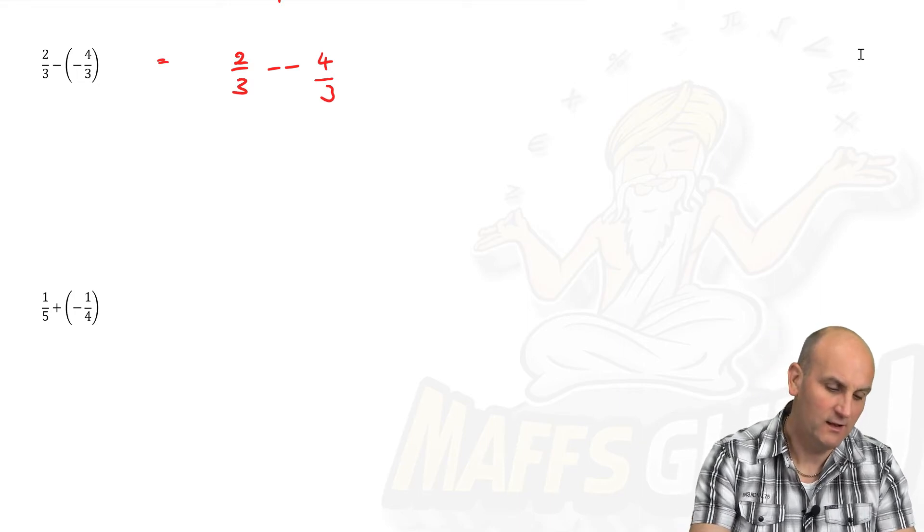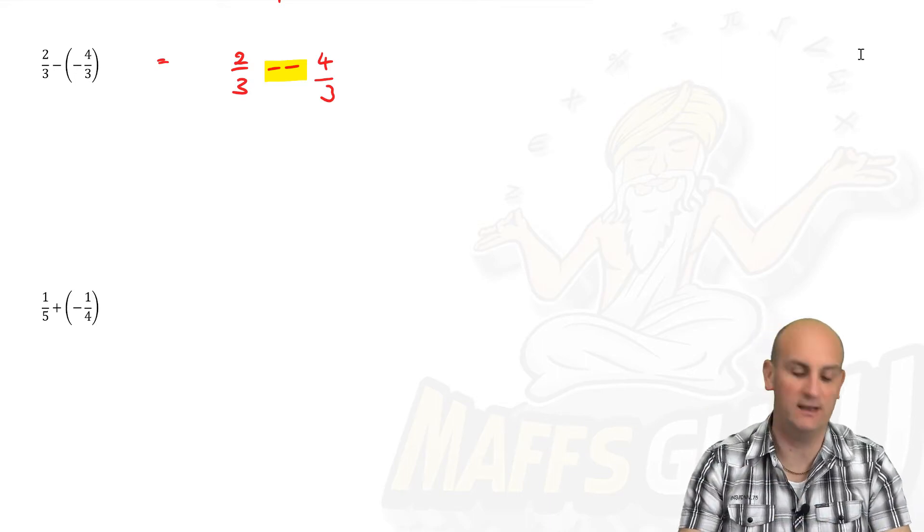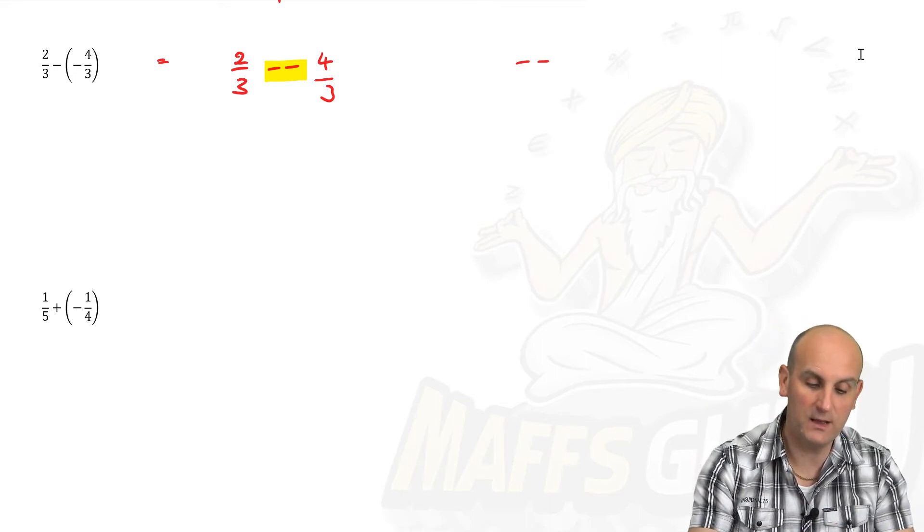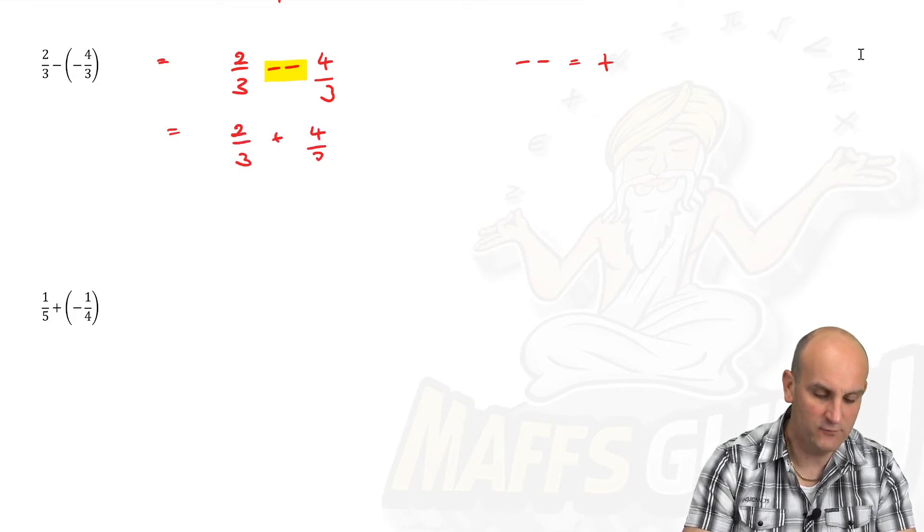Well, a minus and a minus. We're not doing a times, we're not doing a divide question, so I have to process that now. And what do we know two negatives become? A positive. Absolutely. So that becomes two thirds plus four thirds.